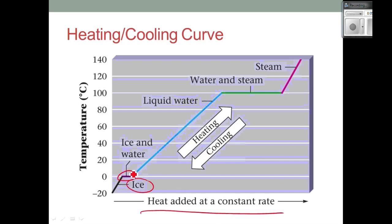Then we have a mixture of ice and water — not pure ice and not pure water. What do you notice about that line? It's flat. We are still adding heat, but the temperature of that ice and water mixture stays at zero. That heat is going to melting the ice, not heating the water up. So we stay at zero Celsius. But as soon as all that ice melts, we're going to start climbing in temperature for the liquid water.